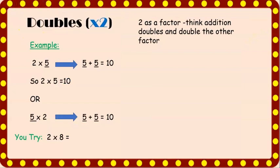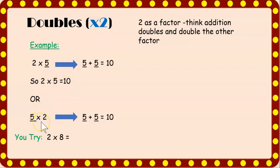Let's start with the twos, or what we call the doubles. When you have two as a factor, think addition doubles and double the other factor. Here we have a good example: two times five. You take the other factor and simply double it — five plus five is ten. So we know that two times five equals ten. Or if we reverse it, five times two also equals ten. This brings to mind the commutative property, where it doesn't matter which factor comes first — the product will still be the same.